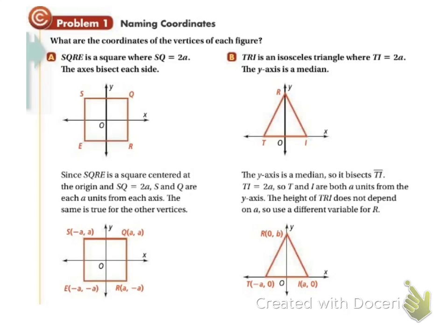Let's look at this square. It tells us that the side is 2a, so this whole thing is 2a. And it says that the axes bisect each side — bisect means splits into two. So this is a and this is a. Since it's a square, all sides are 2a, so each of these parts are a.